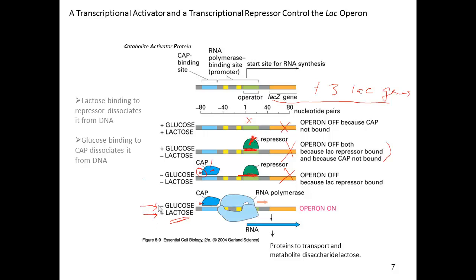It's only in the last case where there's no glucose — so you have high levels of cyclic AMP — that the CAP protein binds to the DNA, providing extra thermodynamic binding energy to help recruit the RNA polymerase to the promoter. And since there is lactose present, lactose is bound to the repressor, the repressor has fallen off, and now you can make the genes that are going to help you metabolize lactose. So in this very simple way, using two proteins — one an activator, one a repressor — you can respond to a variety of environmental conditions and make the proper choices on gene synthesis.